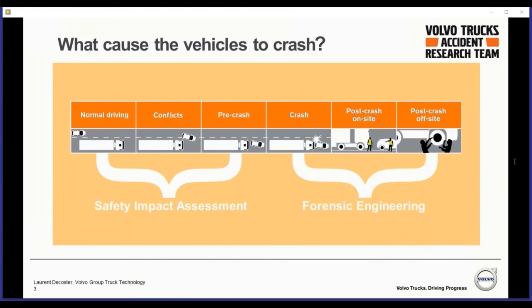What causes crashes? We divide investigation into two different steps: post-crash and pre-crash. Starting with post-crash — that's what our accident research team used to focus on. After a crash happened, we went to the dealer and looked at different parts: what are the deformations, what happened, how did the passive safety work? We use 3D scanners, different measurement tools, and read data recorded in the truck. From these investigations we create countermeasures that we can put in place in our next products.